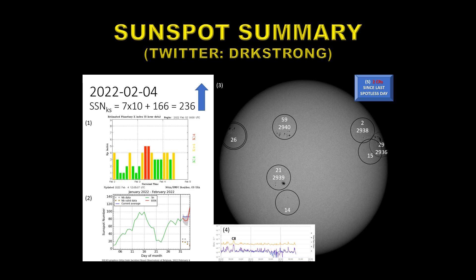We haven't had very many flares. The last significant flare was the C8 flare two days ago. I wonder why, when we've got so many large regions, we don't get more and bigger flares. There's also been two complete Carrington rotations since the last spotless day.